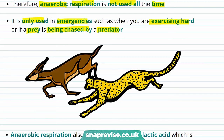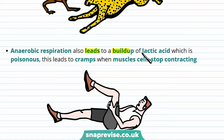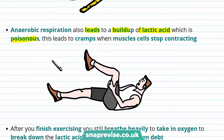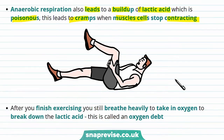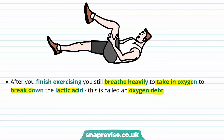One problem with respiring anaerobically is that anaerobic respiration leads to a build-up of lactic acid. Lactic acid is actually poisonous and leads to cramps when muscle cells stop contracting. After you've finished exercising you still breathe heavily, and this is to take in oxygen to break down the lactic acid. This is called an oxygen debt, and you take in extra oxygen to repay it.